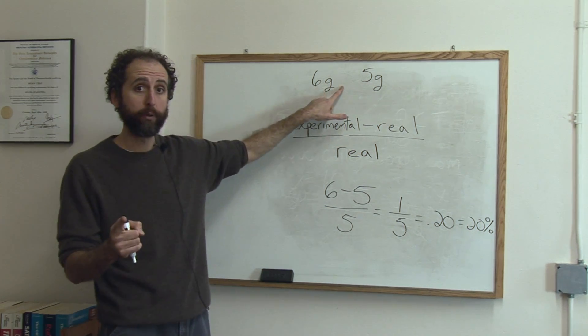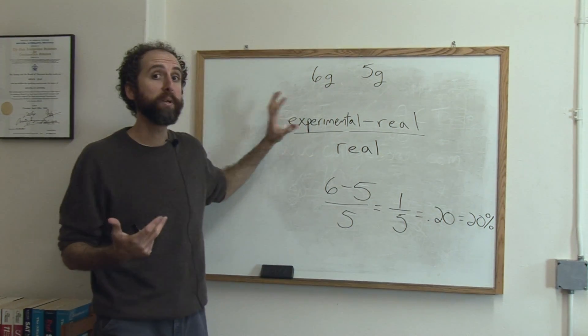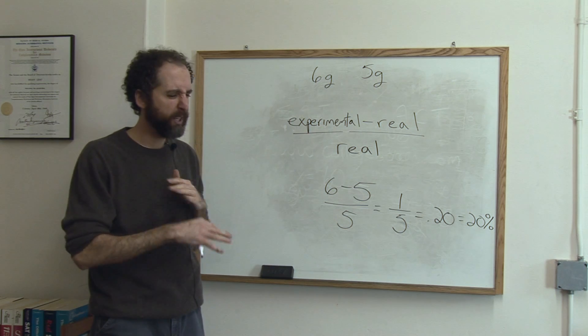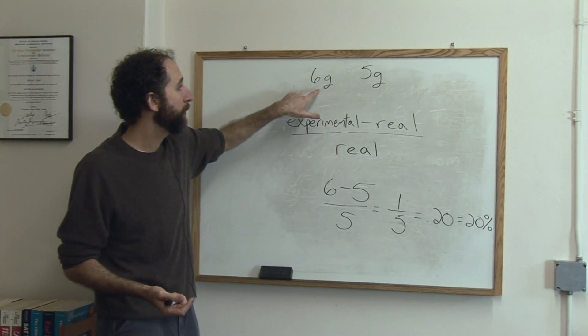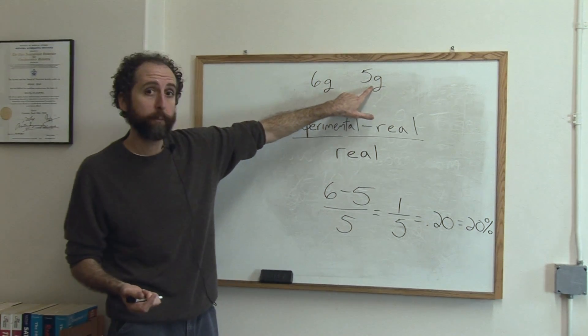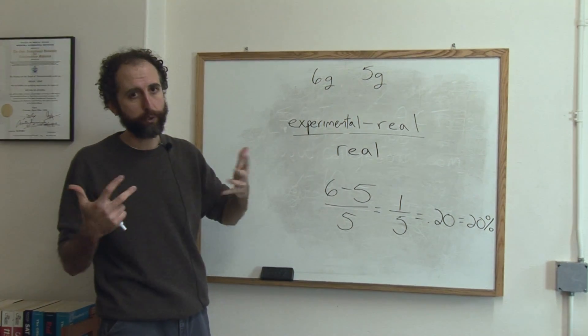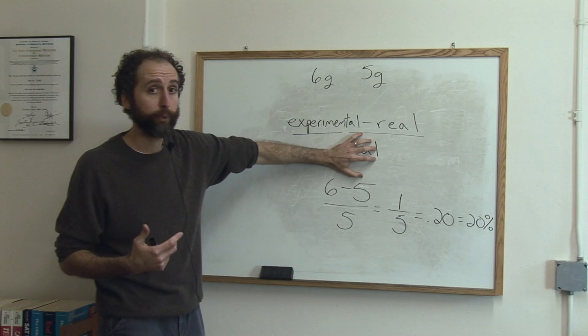Like you were off one gram. If this thing weighed a million grams and you were off one gram, that'd be nothing. So the relative error would be very, very small. But one gram out of five grams is a fair bit. That's why it's called relative error. It's relative to how much it really weighed.